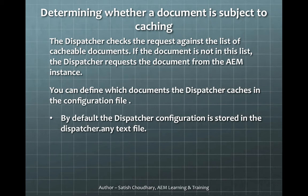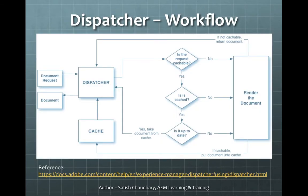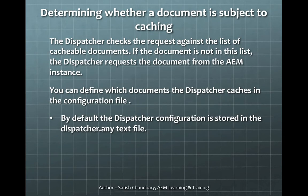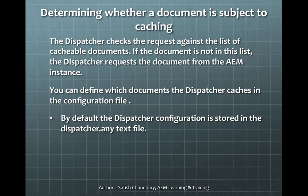How do we determine whether a document is subject to caching or not? In the previous flow we said: is the request cacheable? There is a way to configure what requests are cached and what are not. All these configurations are stored in the dispatcher.any text file — you can name it anything, but the very common pattern is dispatcher.any. The dispatcher checks the request against the list of cacheable documents defined in this dispatcher.any file. If the document matches the configuration, it will cache it; if not, it will not cache it. Anything not defined in dispatcher.any will not be cached; anything defined in dispatcher.any will be cached.